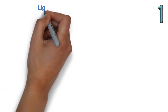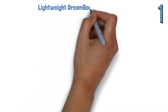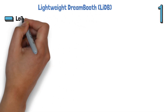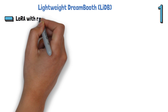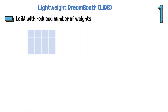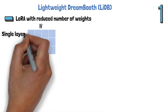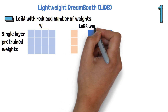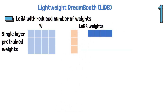Let's now break down each of the three components in more detail, starting with Lightweight DreamBooth, or LIDB in short. They use LoRA with a reduced number of weights. For each layer we have a matrix W, which are the pre-trained weights. With LoRA we add weights — a column and a row — which is a smaller number of weights than the weight matrix W, but when we multiply the LoRA weights we get a matrix of the same dimensions as W.